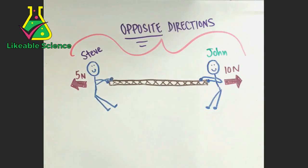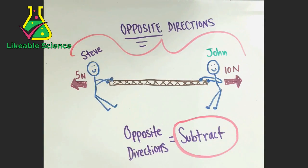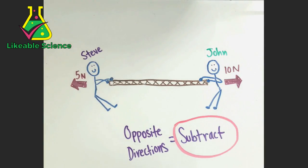Steve is using 5 newtons of force, and John is using 10 newtons of force. Steve and John are pulling in opposite directions, so we have to subtract.